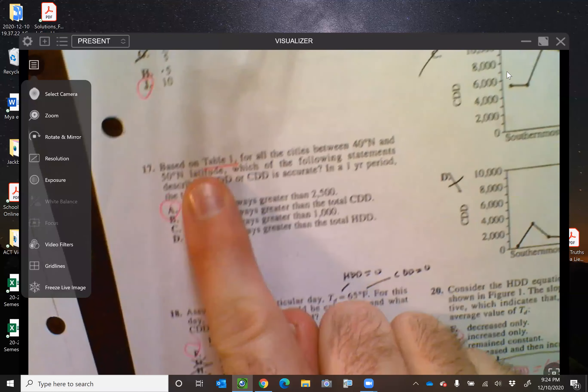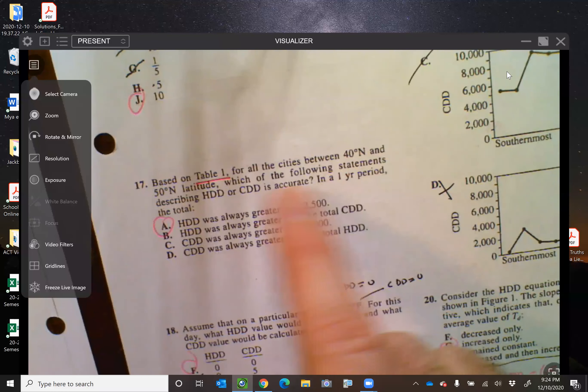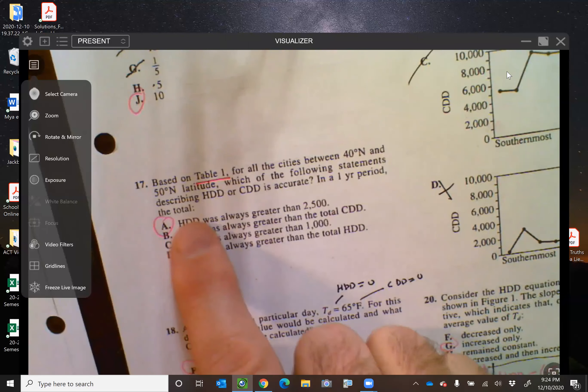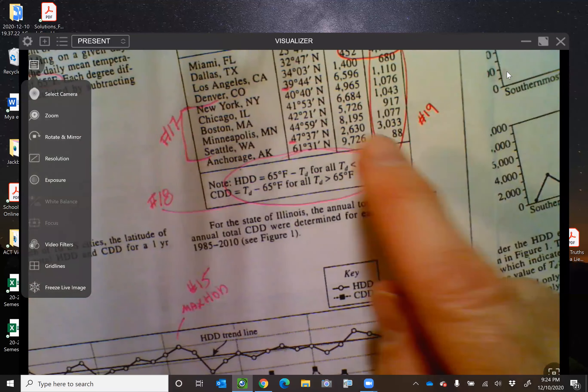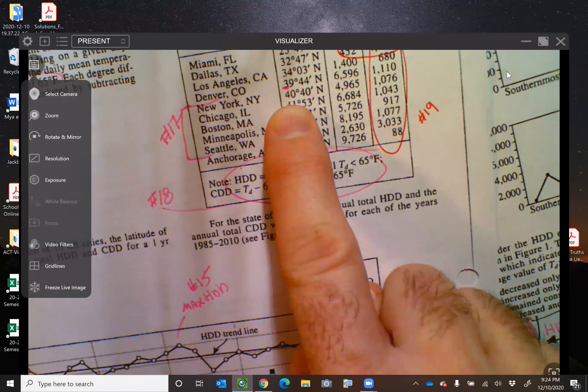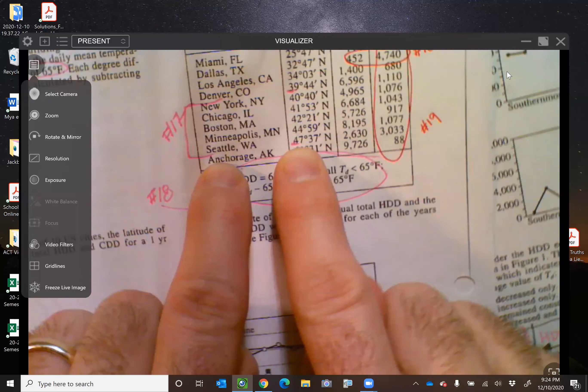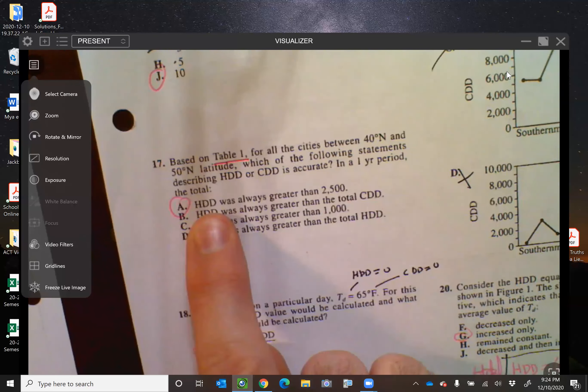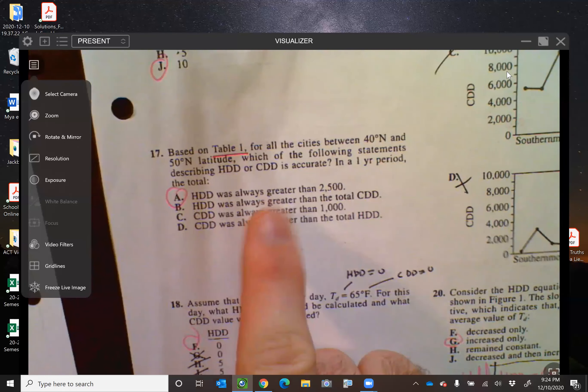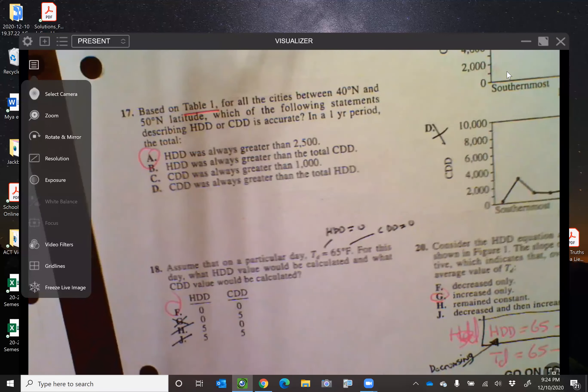17, based on the table one, for all the cities between 40 and 50, which of the following statements describe HDD and CDD? So if I look at those, between 40 and 50, from New York all the way to Seattle, looking at all the choices, eliminating as I go, letter A, HDD is always greater than 2,500.